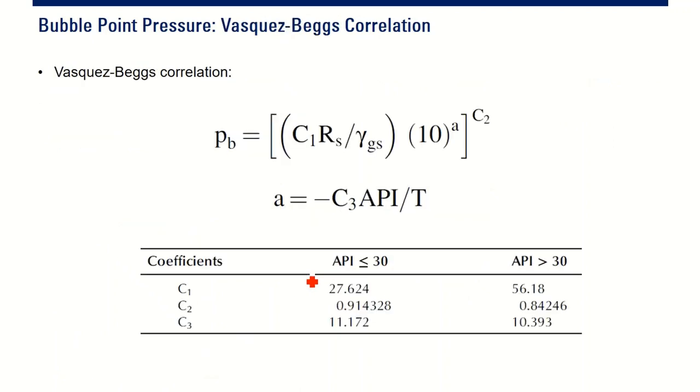Then Vasquez-Beggs correlation. You need RS, gas specific gravity, API gravity, and temperature.